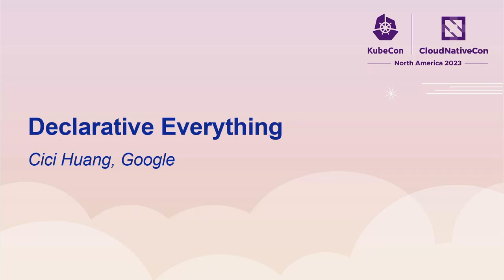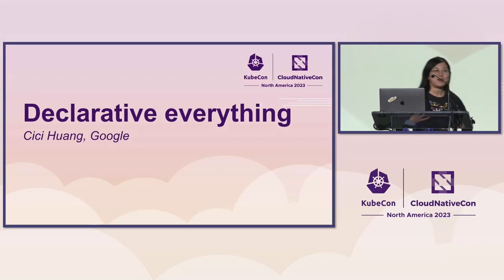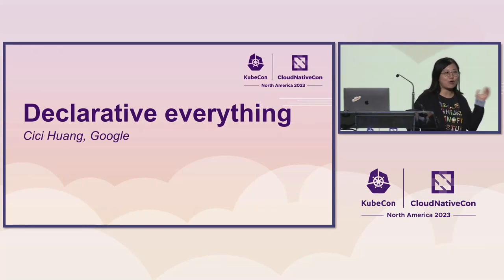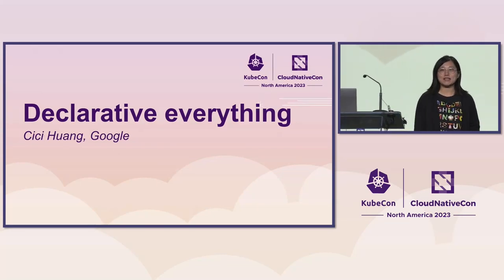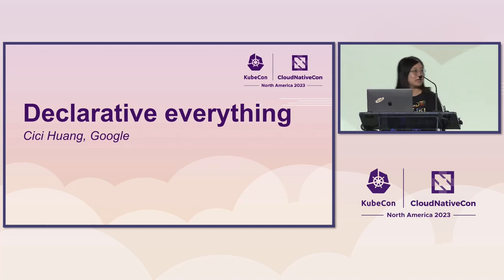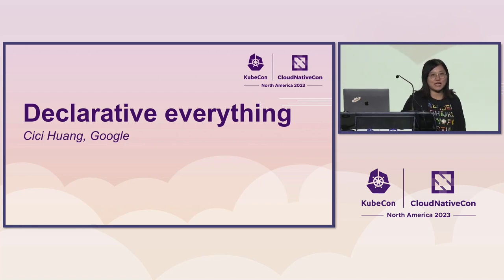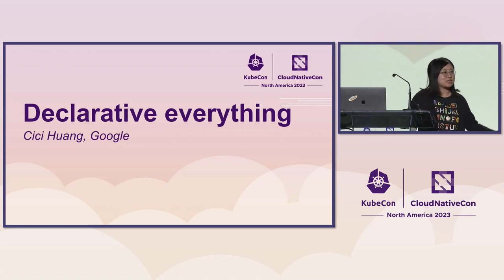Hi everyone, thank you for being here today. Let's get the talk started. First, a little bit about myself. My name is CeCe Huang, and I'm currently working at Google as a software engineer. I've been contributing directly to Kubernetes upstream for a couple of years and across multiple SIGs. For those not familiar with the Kubernetes upstream community, SIG is short for Special Interest Group.